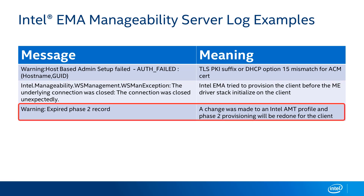The third example is the message 'Warning: Expired phase 2 record.' You'll see this if you make a change to an AMT profile that's already been used to configure devices you're managing. For instance, if you add an additional wireless network to your AMT configuration profile, the Intel EMMA server will recognize the profile has changed and reapply the second phase of AMT provisioning to those devices so they pick up changes such as adding or removing Wi-Fi networks.